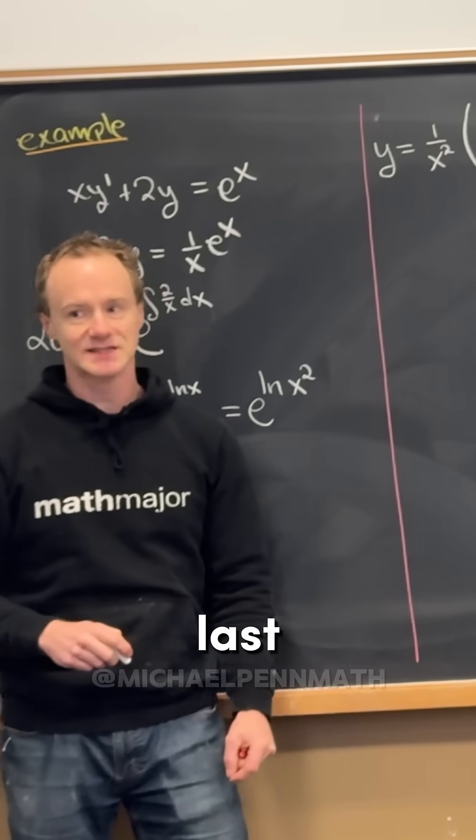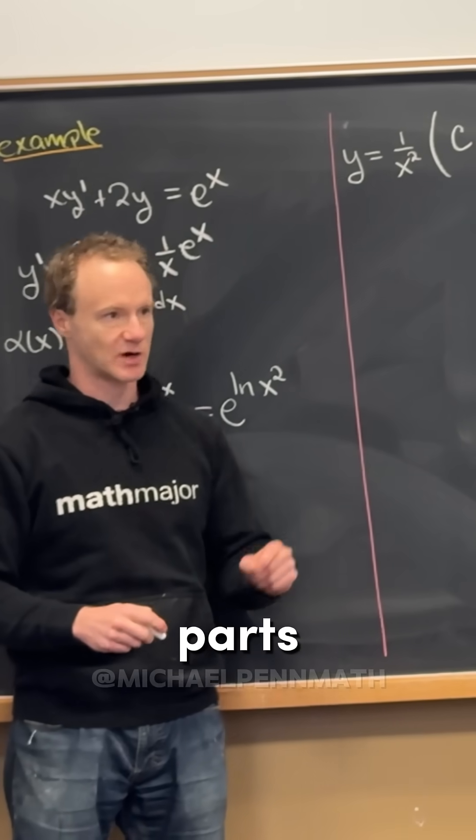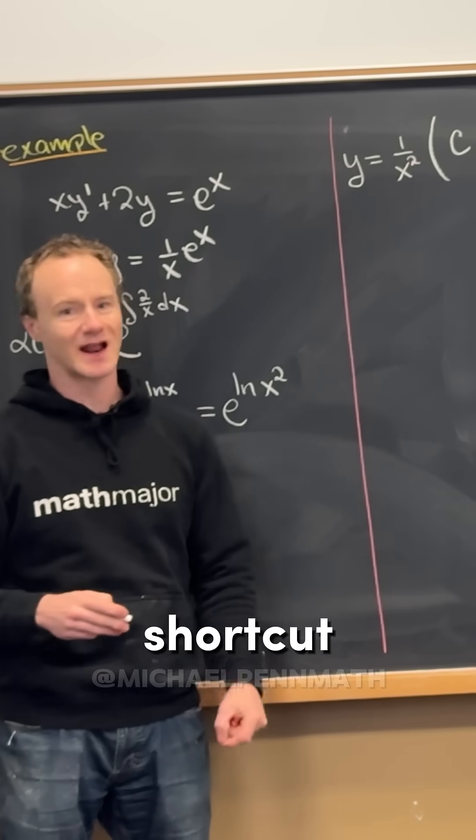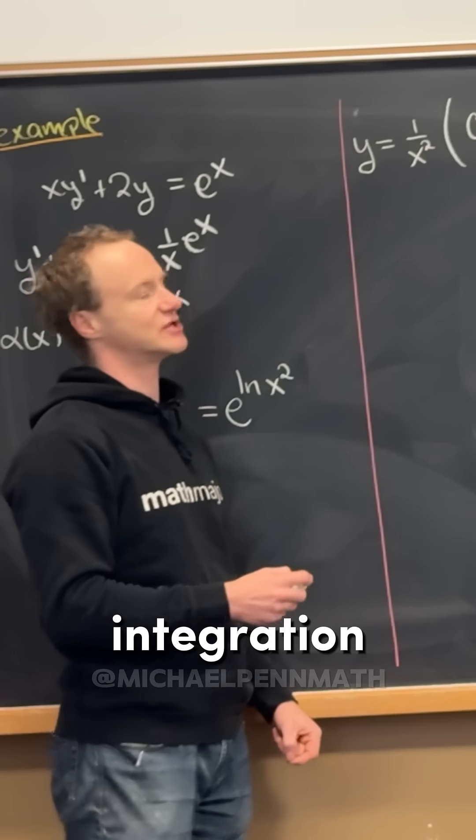If you recall from last time, we did the antiderivative of x times e to the x using integration by parts. We did that tabular method for a shortcut. I'm just going to write down what we did yesterday because I don't want to do the same integration example again.